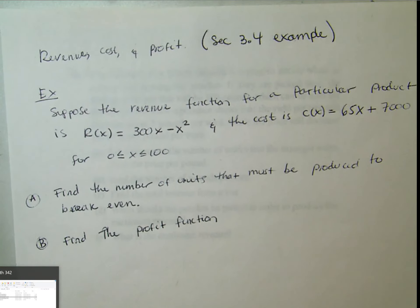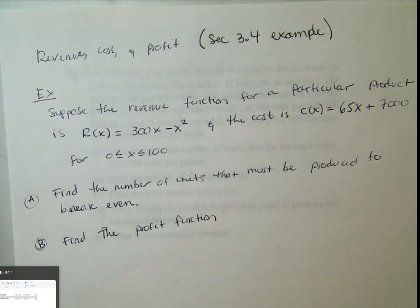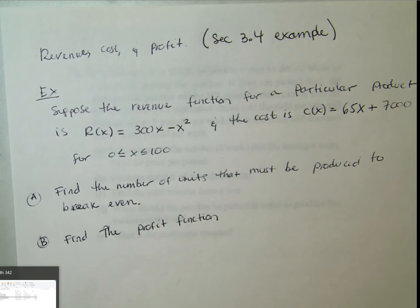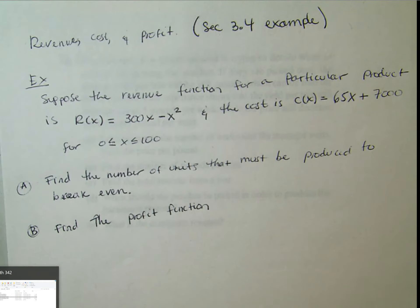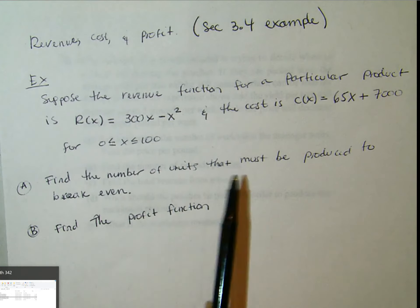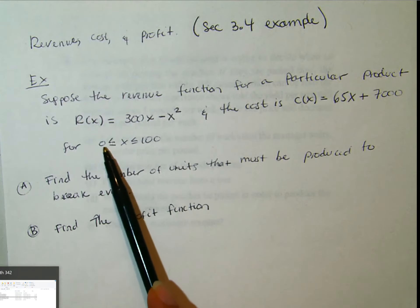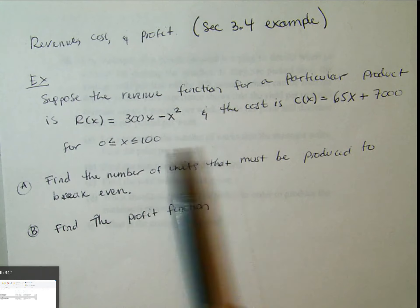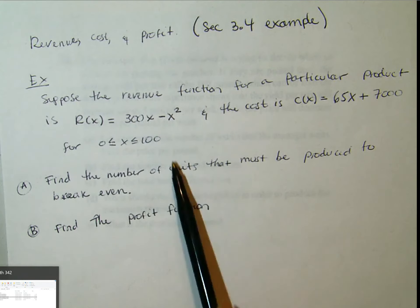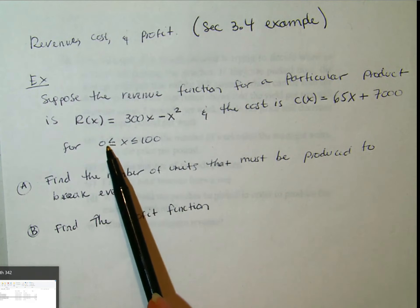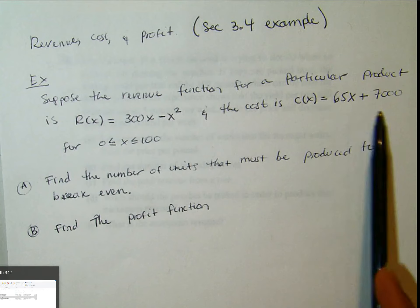Hey there, so we're going to do an example of section 3.4, an application of revenue, cost, and profit. The problem says: suppose that the revenue function and the cost function for a particular product are given, for 0 less than x less than 100, where x is the number of units being produced. This is the revenue function and this is the cost function.